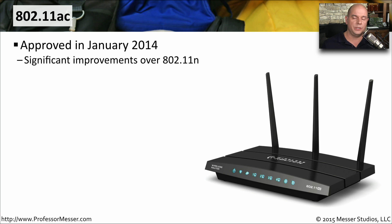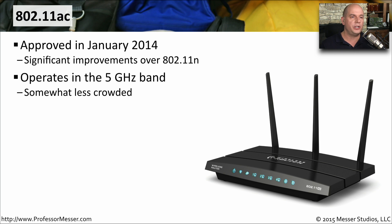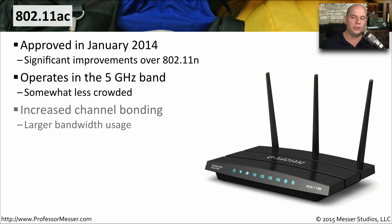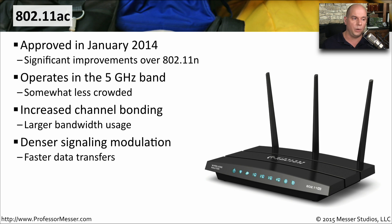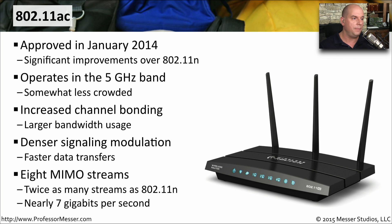802.11ac was introduced in January of 2014 and brought a number of improvements over 802.11n. This version operates exclusively in the 5 gigahertz band and increased the number of channels that can be bonded together, increasing theoretical throughput. We're also able to have faster data transfers, and when you combine the eight MIMO streams with these updates, we can have nearly 7 gigabits per second of throughput on an 802.11ac network.